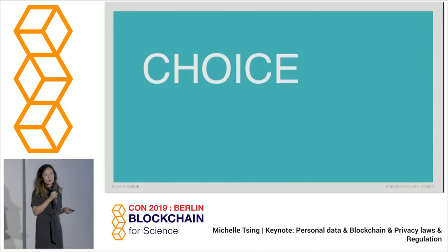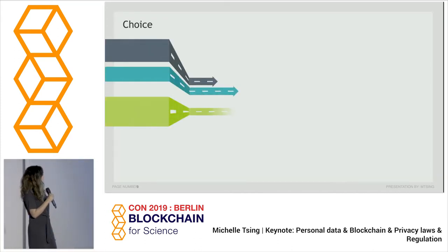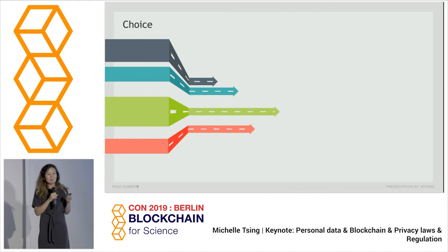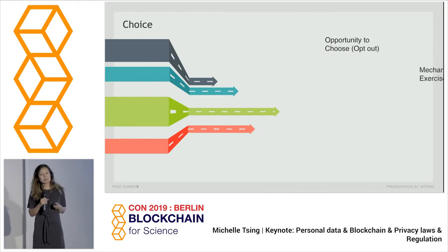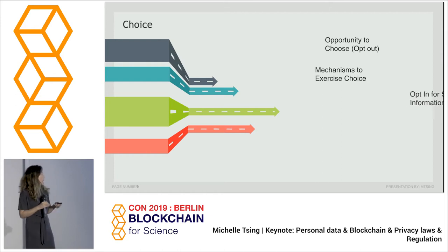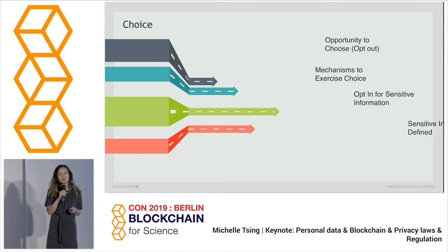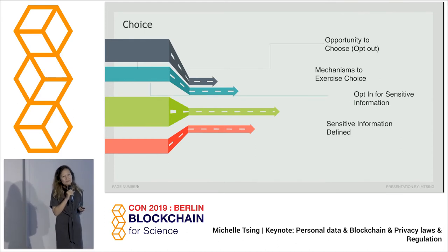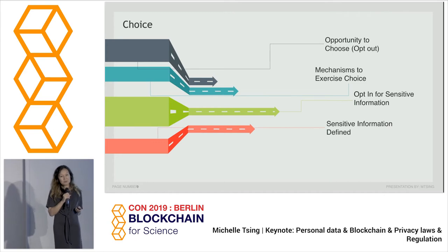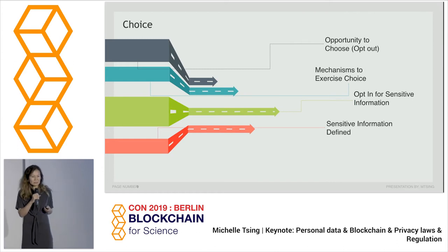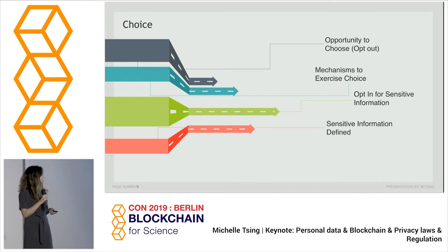Of course, choice is important. With choice, it's really about opting out — allowing your consumer to opt out — and also opt in if it includes sensitive information. What is sensitive information? Health data, trade unions, and spiritual or religious beliefs are some examples. Insurance companies can do things to you once they have that information, so it's really important to allow people to opt in.